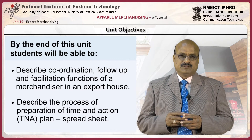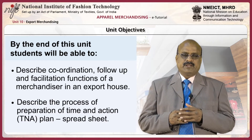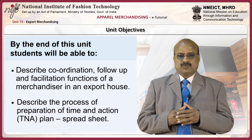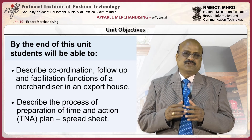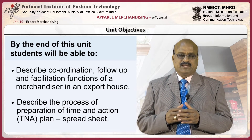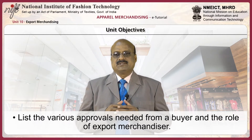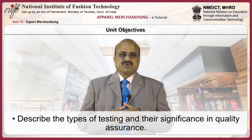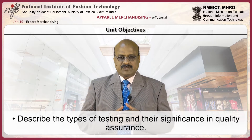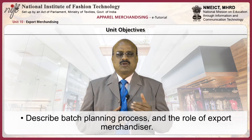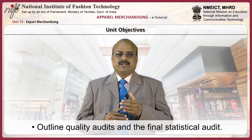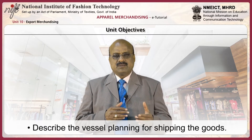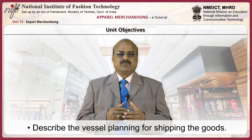By the end of this unit, students will be able to describe the coordination, follow-up, and facilitation functions of a merchandiser in an export house. Describe the process of preparation of a time and action plan spreadsheet. List the various approvals needed from a buyer and the role of the export merchandiser. Describe the types of testing and their significance in quality assurance. Describe the batch planning process and the role of the export merchandiser, outline quality audits and the final statistical audit, outline vendor compliance and its importance, and describe the vessel planning process for shipping the goods.